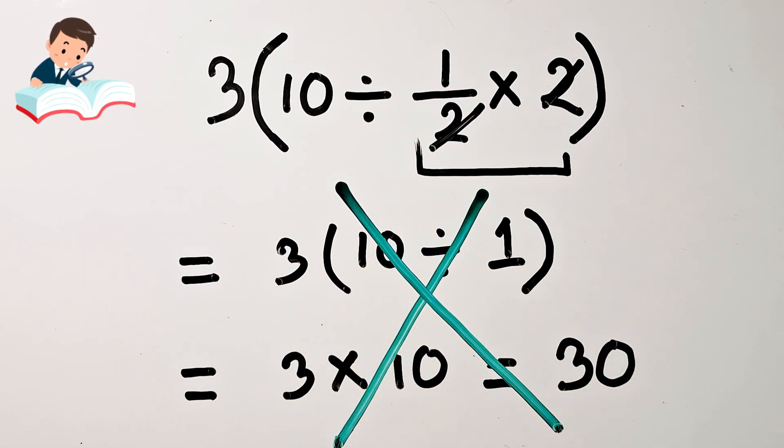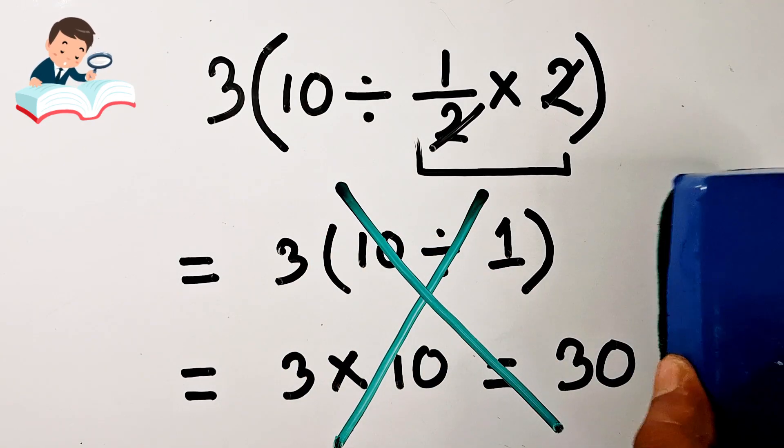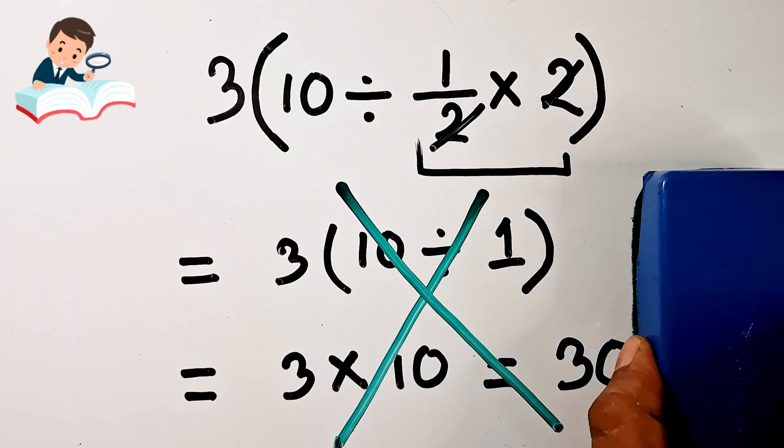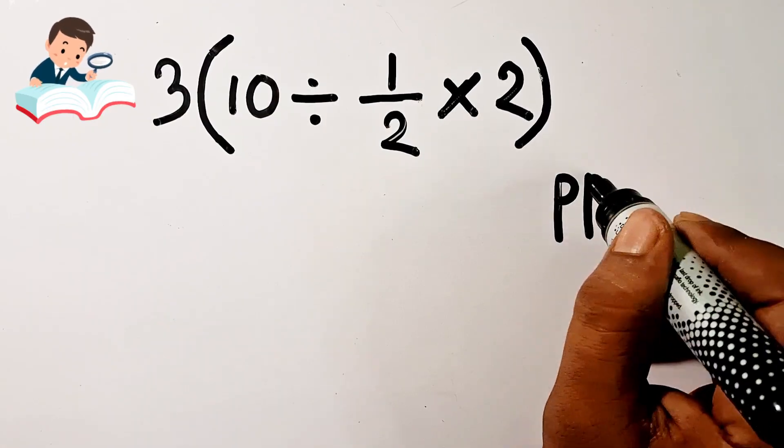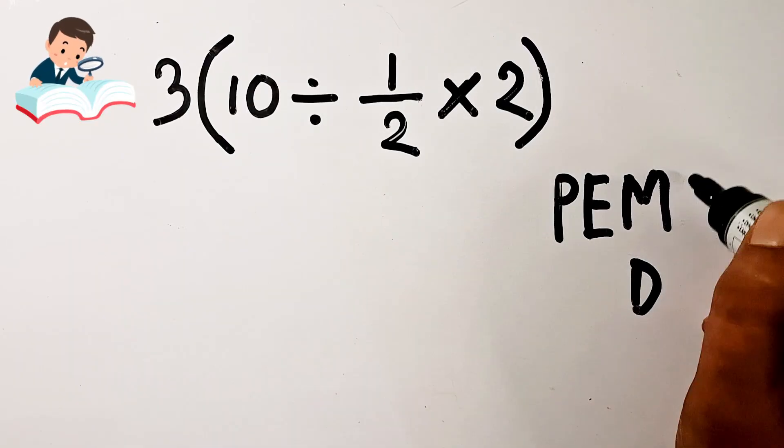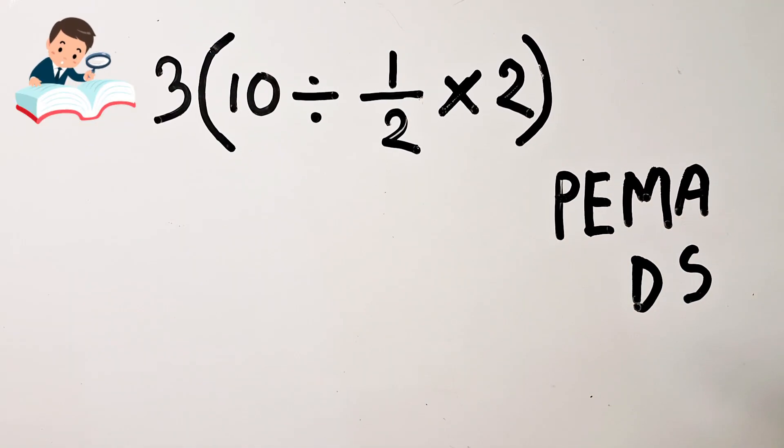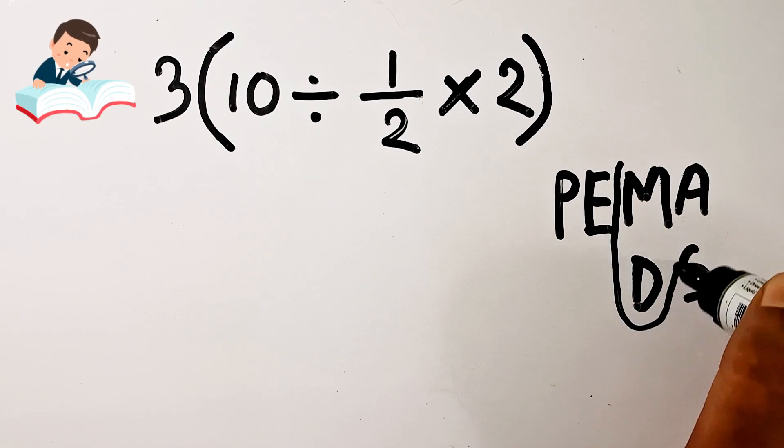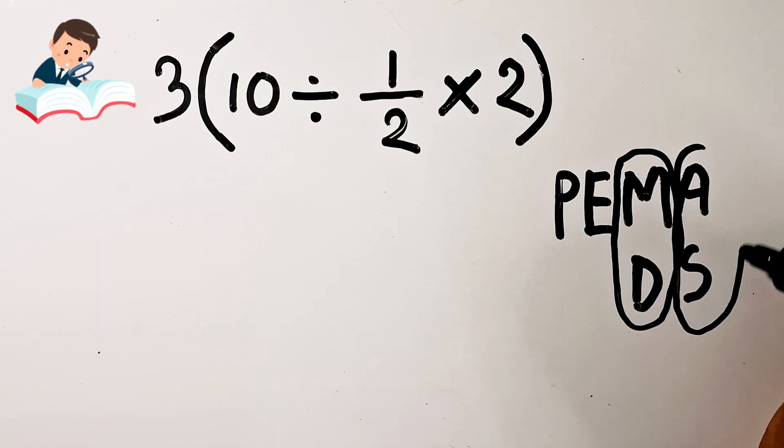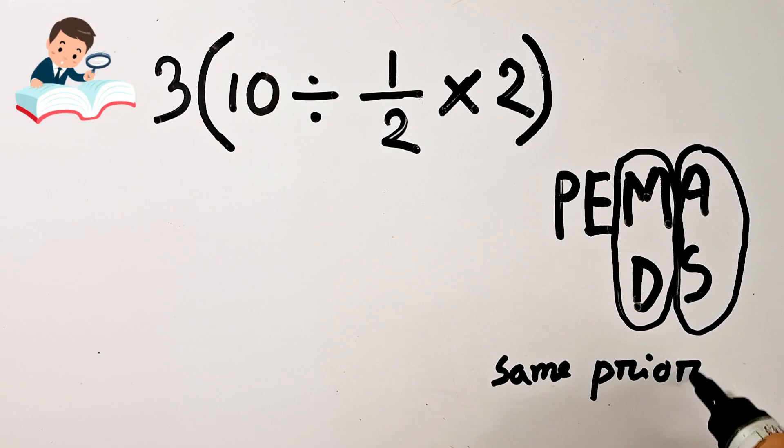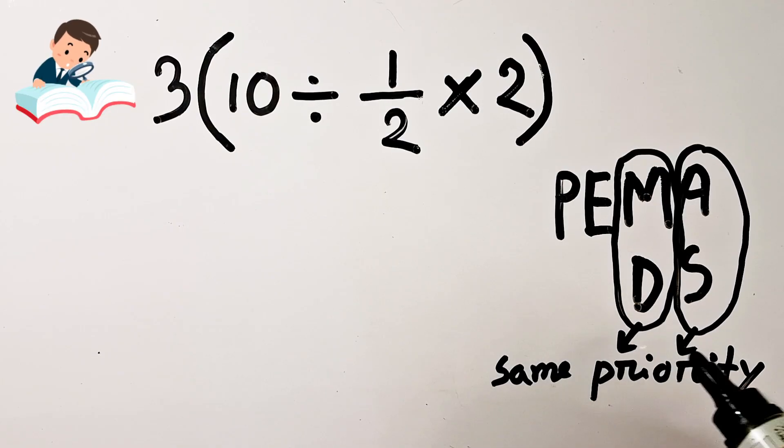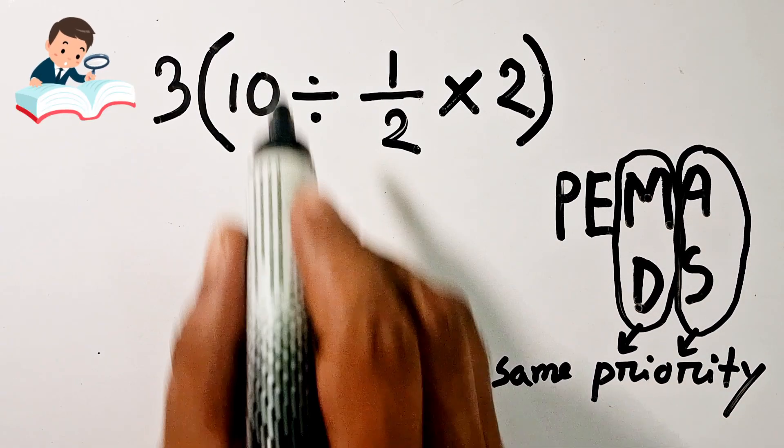According to the PEMDAS rule, multiplication and division have the same priority, as do addition and subtraction. That means you can do either multiplication or division first. It is decided by going left to right in the expression. So first, in the bracket, 10 divided by half will be first.